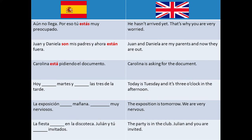'Hoy, martes y las tres de la tarde' — Today is Tuesday and it's 3 o'clock in the afternoon. When we talk about time, we always use the verb ser. A curious fact: when we talk about a specific day of the week, even when we talk about the future, we use 'es' — for example, we could say 'mañana es martes,' which means tomorrow is Tuesday.